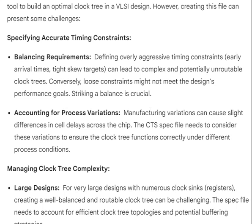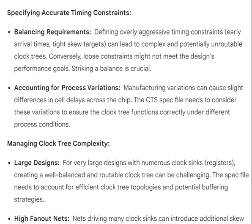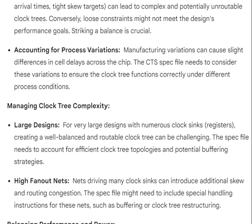Defining overly aggressive timing constraints — early arrival times and tight skew targets — can lead to complex and potentially unroutable clock trees. Conversely, loose constraints might not meet the design's performance goals. The CTS spec file also needs to account for process variations, since manufacturing variations can cause slight differences in cell delays across the chip.